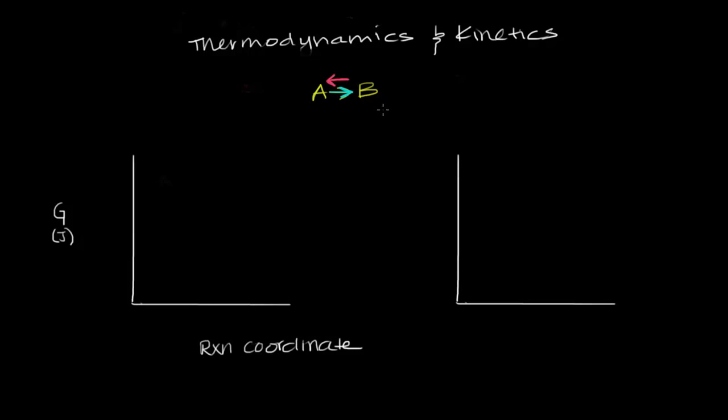I'm going to say that the forward reaction has a negative delta G value. So remember, that means it's spontaneous. And visually, that means that our reactants start off at a higher free energy than our products.